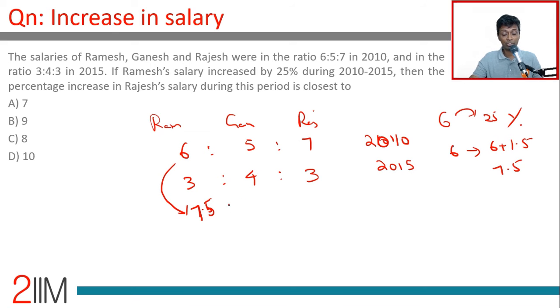3:4:3 is 7.5 to what? 3 into 2.5 is 7.5, 4 into 2.5 is 10, 3 into 2.5 is 7.5.